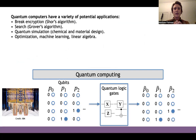Quantum computers have a variety of potential applications with the possibility of speeding up classical algorithms. For example, a famous algorithm for quantum computers is Shor's algorithm, which exponentially speeds up the factorization of prime numbers, with a potential application for breaking RSA encryption. There are other proposed algorithms for speeding up search, quantum simulation of chemistry and materials, optimization, machine learning, and linear algebra.